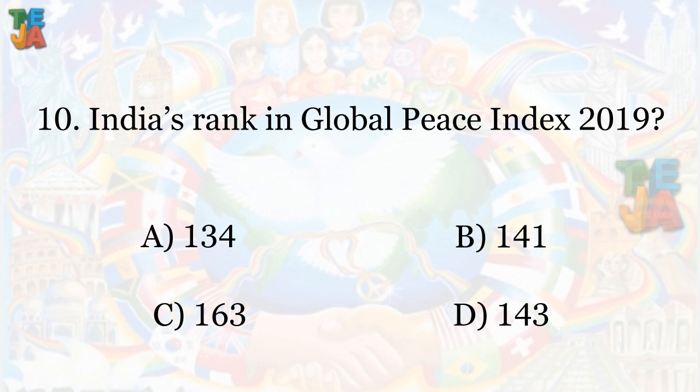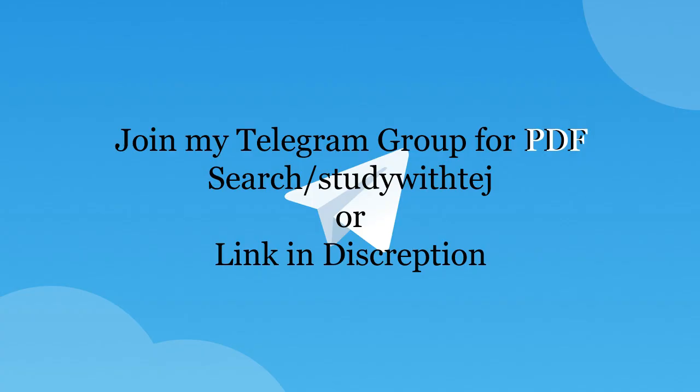Question 10: What is India's ranking in the Global Peace Index 2019? Answer: 141.